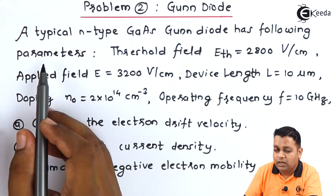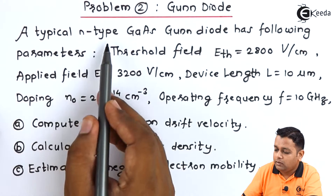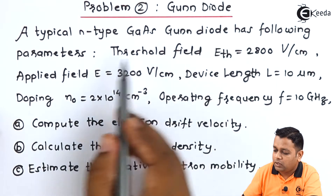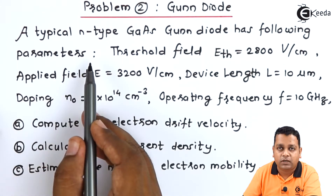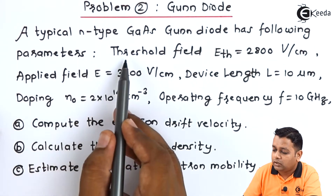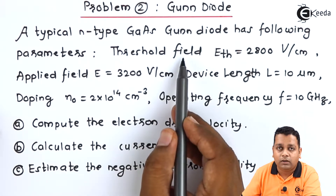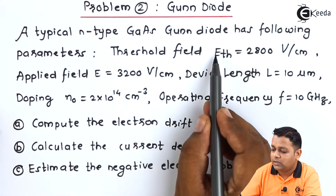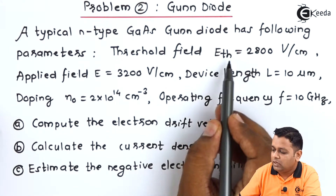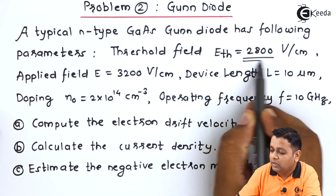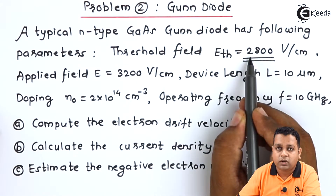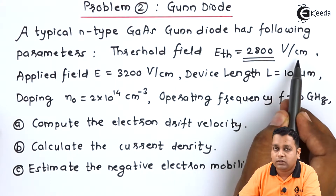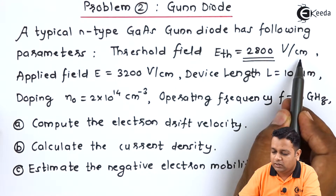A typical n-type gallium arsenide Gunn diode has the following parameters. The very first parameter is the threshold electric field, denoted as E_TH, and its value is provided as 2800 volts per centimeter.